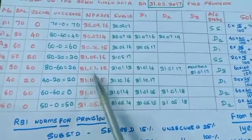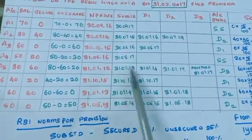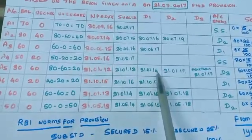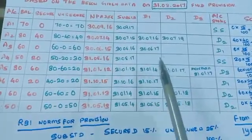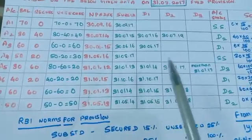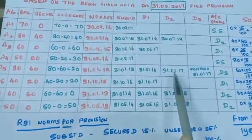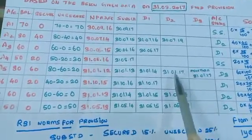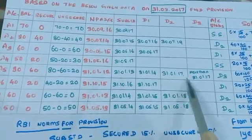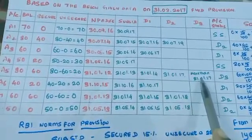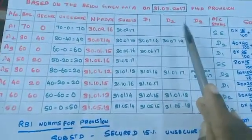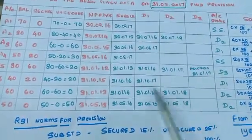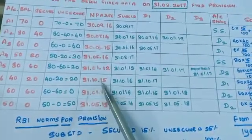The next NPA date is 31-1-12 for A5. Up to 2013 this is under substandard category, up to 2014 this is under D1. From 2015 through 2017, this account is in D2 category, and more than 31-1-17 it falls under D3. Our date is 31-3-17, so on 31-3-17 this account is in D3 category.